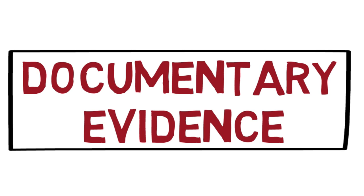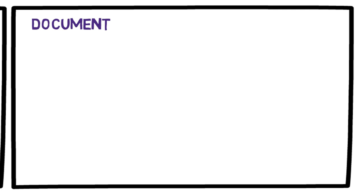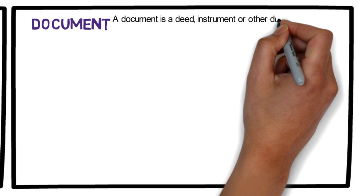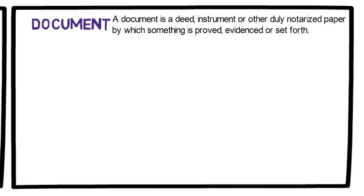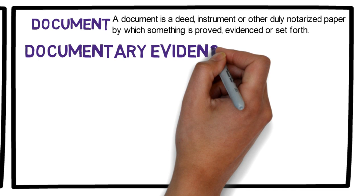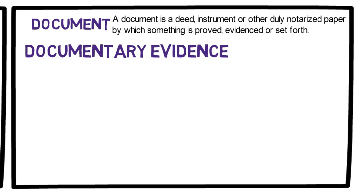Welcome back, future criminologists. In this video, I will be discussing documentary evidence. Before discussing what is documentary evidence, let us first define the word 'document.' A document is a deed, instrument, or other duly notarized paper by which something is proved, evidenced, or set forth. In Filipino: ang isang dokumento ay isang kasulatan, instrumento o nanotoryahang papeles na nagpapatunay sa isang bagay.